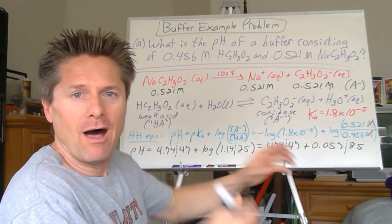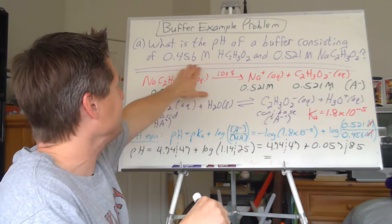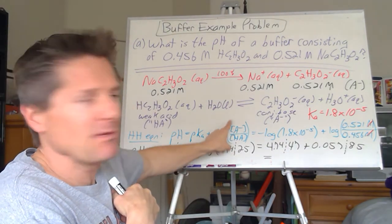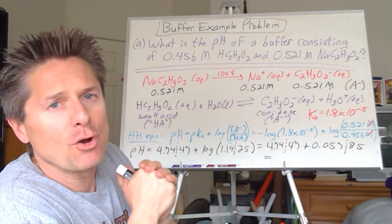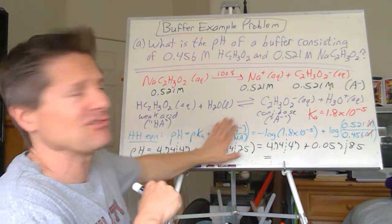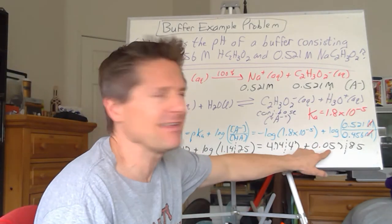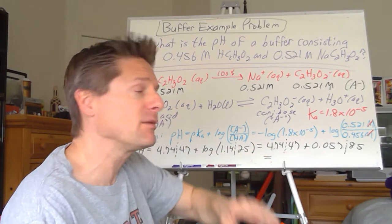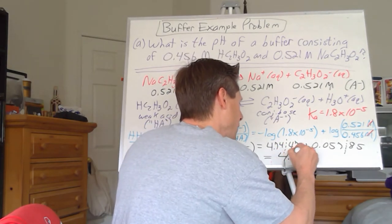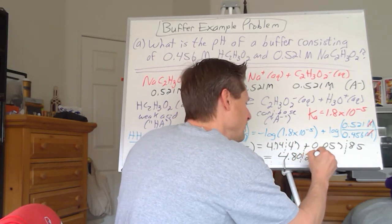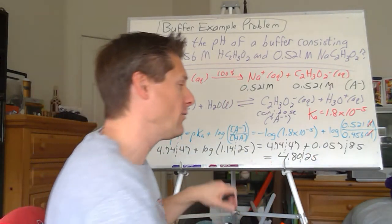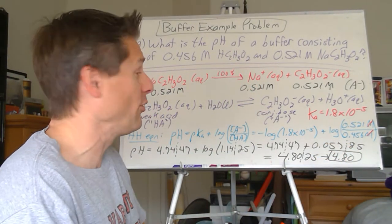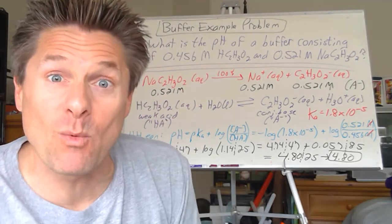The pKa is the baseline pH of the buffer, and there's an adjustment factor based on the ratio of conjugate base concentration to weak acid concentration. If those are equal, pH just equals pKa. Two decimal places here, three there — we're good to two decimal places. pH = 4.80. That makes sense; this is a weak acid buffer, so it should be less than seven.